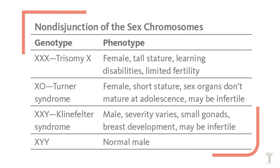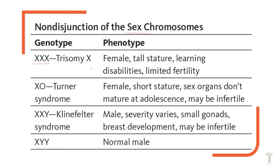Here is a list of the non-disjunctions that can occur in sex chromosomes that are viable. We can survive with three X's, and this is called trisomy X. Someone with three X's will be female, and there can be a whole variety of phenotypes from simply being very tall